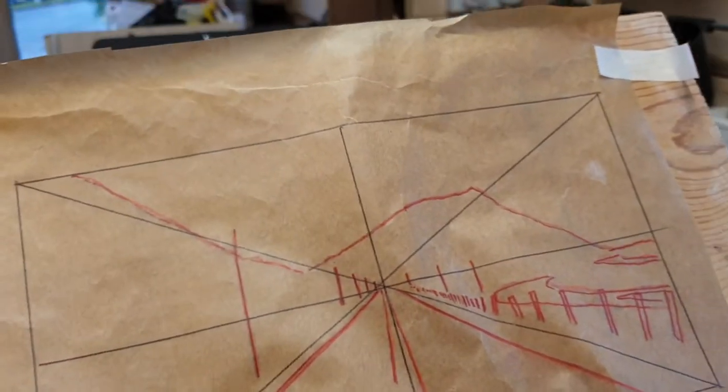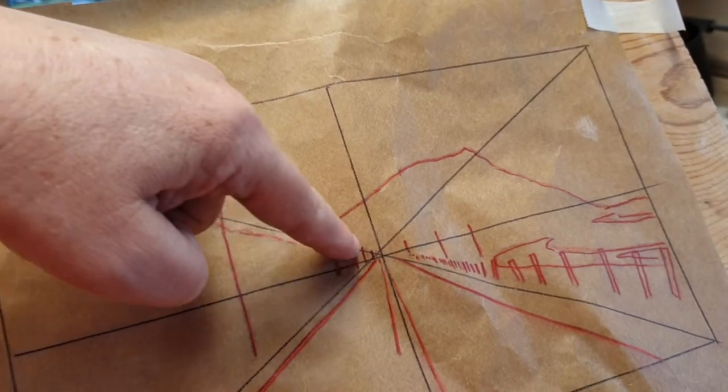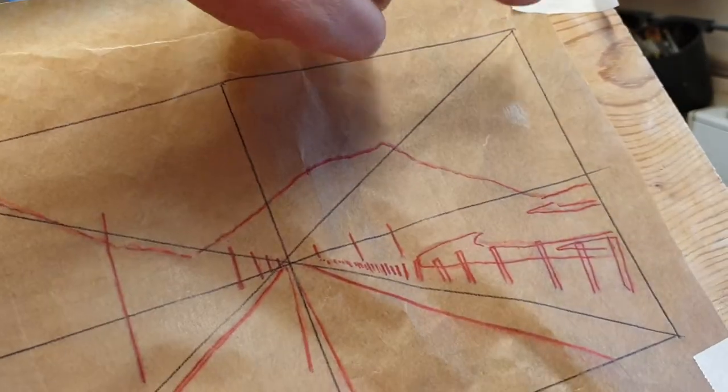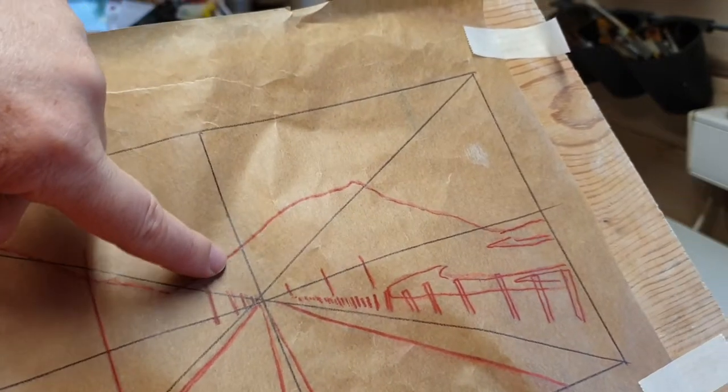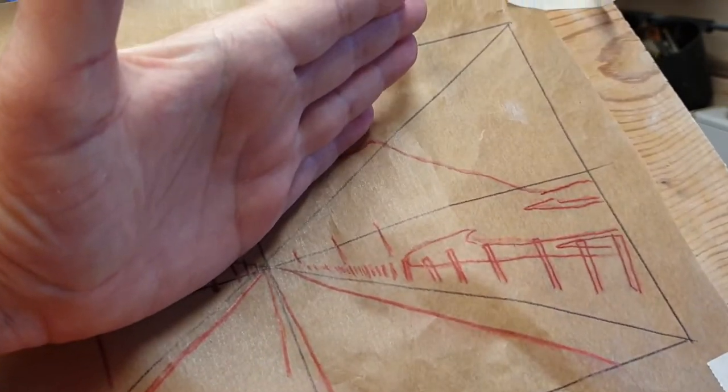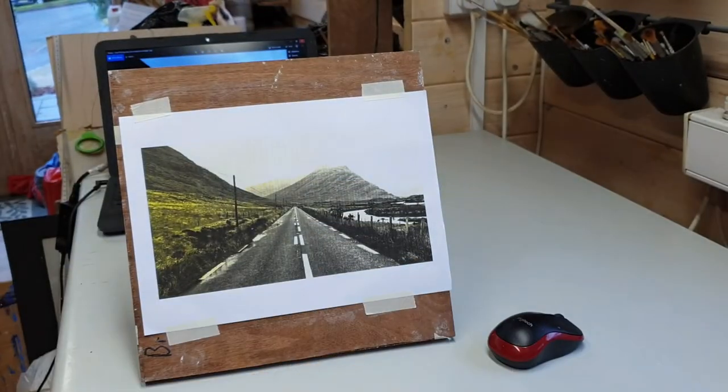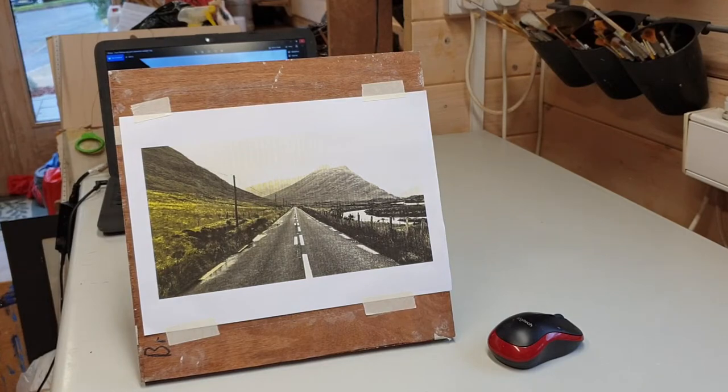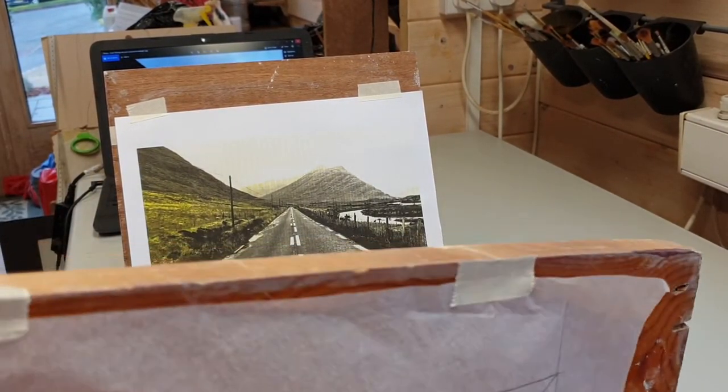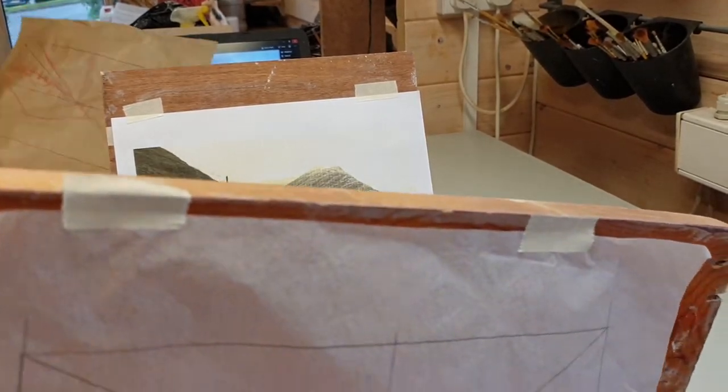The other reason I liked this composition is that you have the mountain range coming down on that convergence line, and you're getting an echo of it here. If it was absolutely like that it'd probably look very contrived, but as you can see it is a natural landscape.